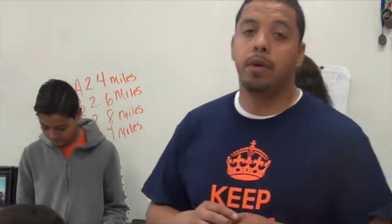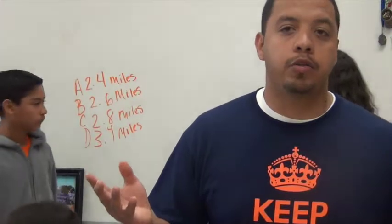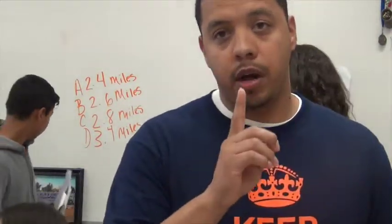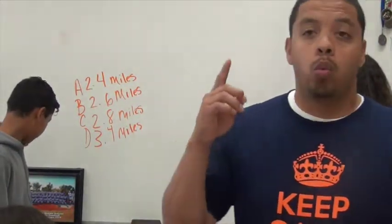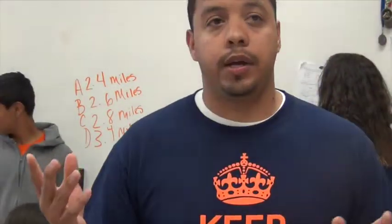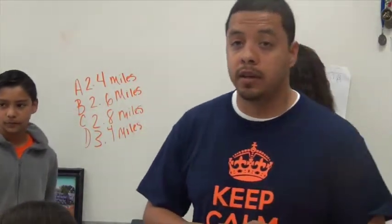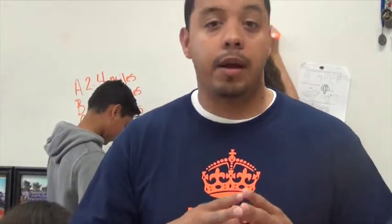So for example, a unit rate would be if I have to pay for four avocados per one dollar. That is a unit rate because it's for one dollar. So anytime it says for one, like one pound, one dollar, one mile, things like that, those are called unit rates.